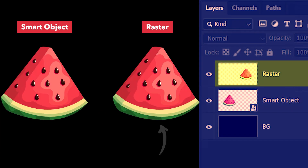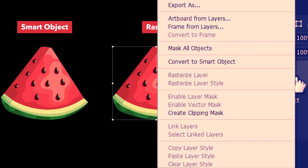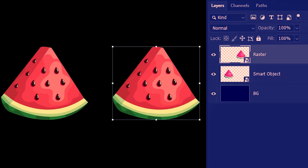Now, how do we convert a raster layer into a smart object? We right-click on the layer and then select 'Convert to Smart Object.' Now it too bears the smart object icon.